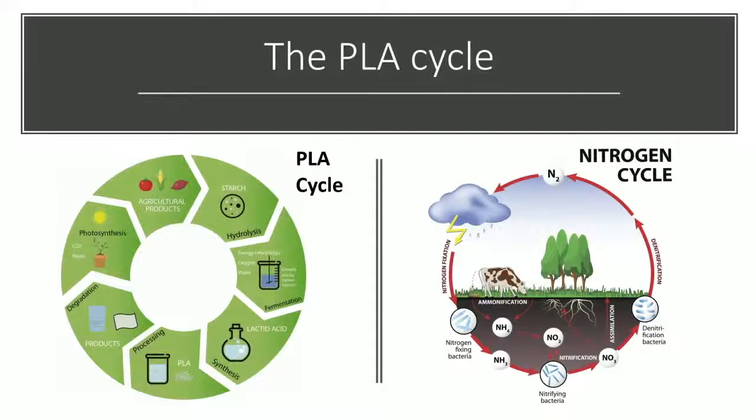Ultimately, the production of PLA and its degradation is very much a cycle that can be traced through and back to corn. Now, unlike the nitrogen cycle, bacteria in the soils can degrade PLA into micronutrients that will then be absorbed by the crops again, creating a circle of life, if you will.